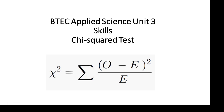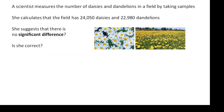BTEC Applied Science Unit 3 Skills. This video is about something called a chi-squared test. It's pronounced chi-squared. In English you would spell it as chi, but it's actually the Greek letter chi, which looks like a big X. So it's a chi-squared test we're going to be looking at.